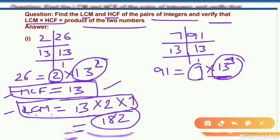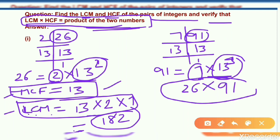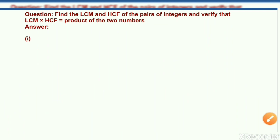Now another part is verification part. We have given some relation. We have to verify that relationship. So LCM multiply HCF is equal to product of two numbers. And we have two numbers are 26 and 91. So these are the products.